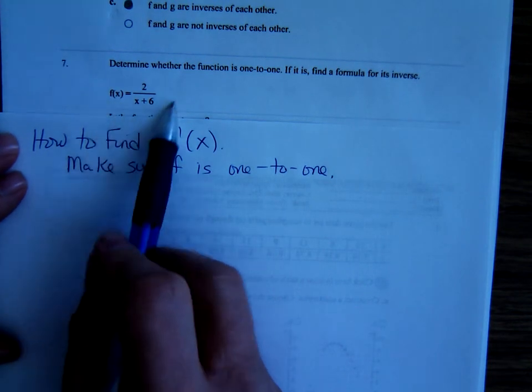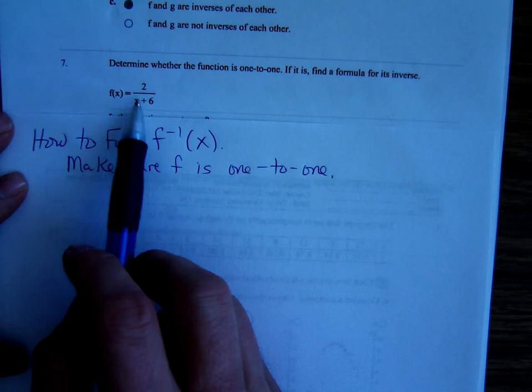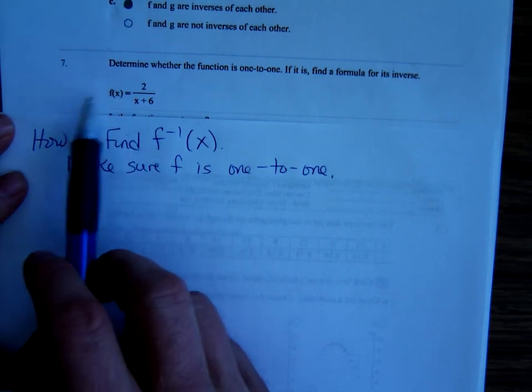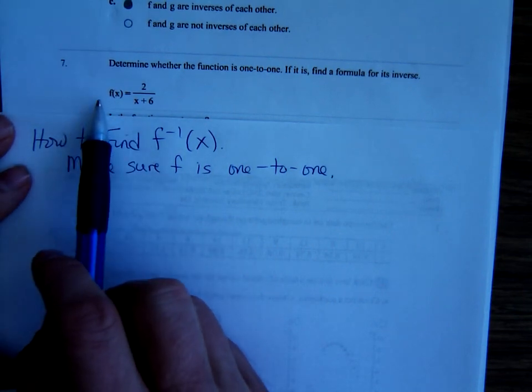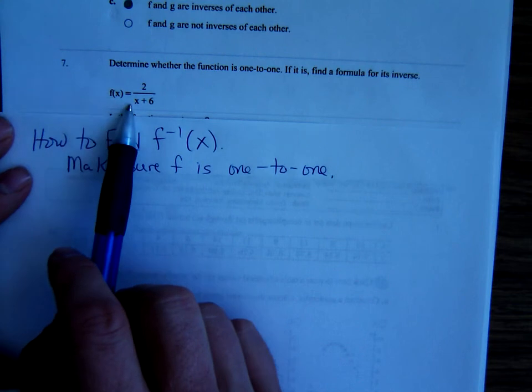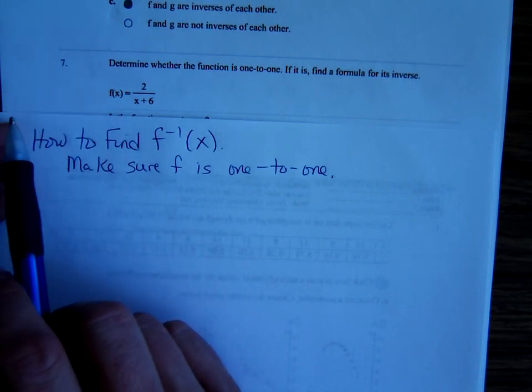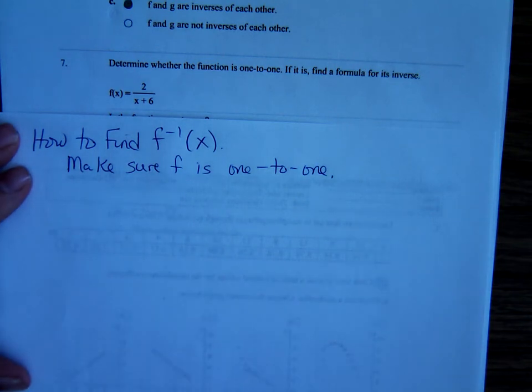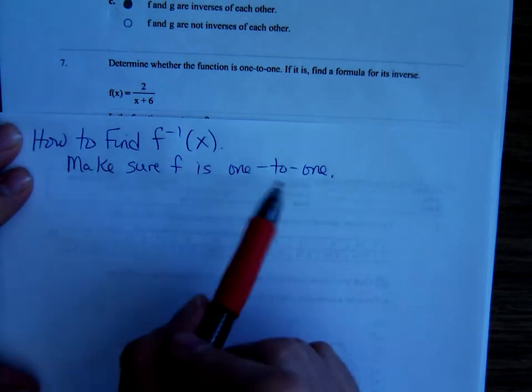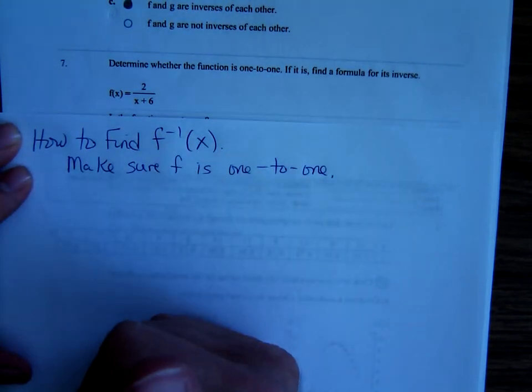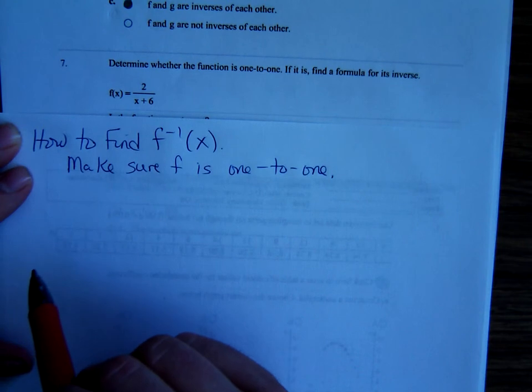So, like on number 7, yeah, it's one-to-one. There's not any repeated y values. And if you have a graphing calculator, you might plug this in and look at it. Notice that it passes the horizontal line test. No horizontal line intersects the graph more than once. But, for our purposes, if it's not quadratic, we'll say it's one-to-one. There's no even exponents in it.